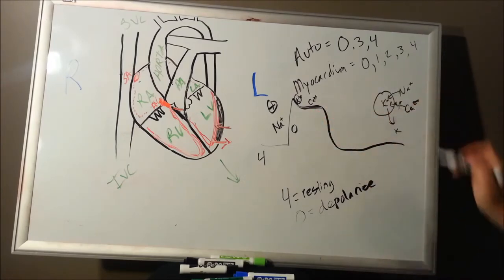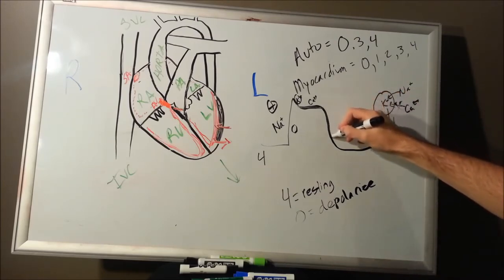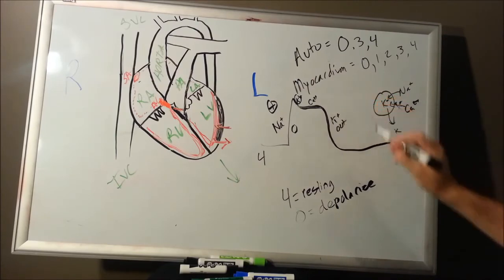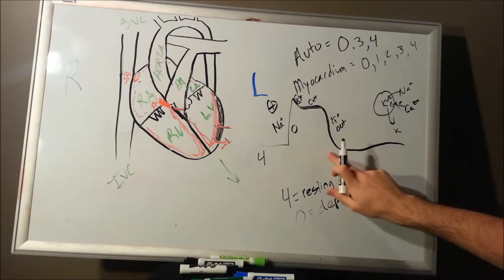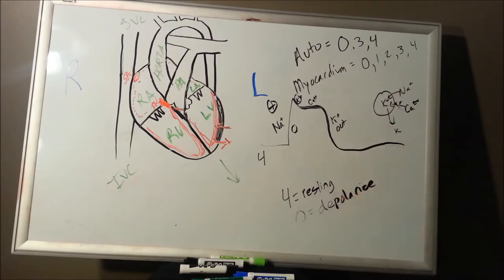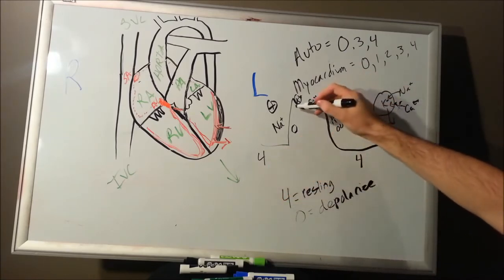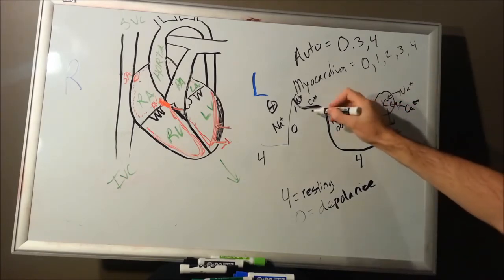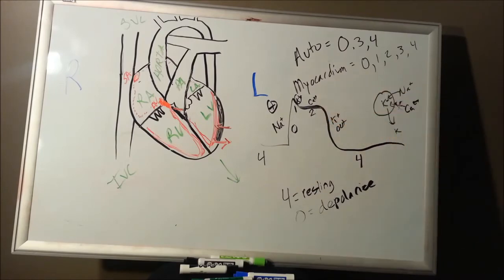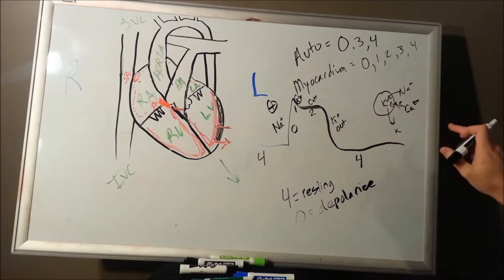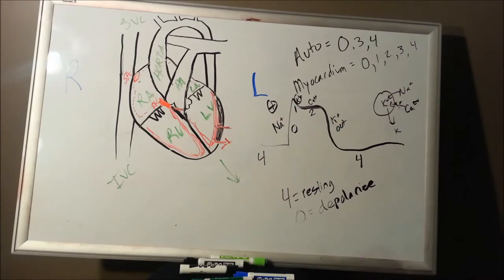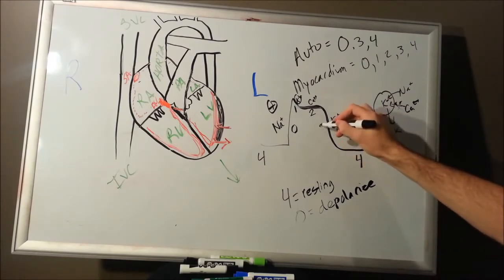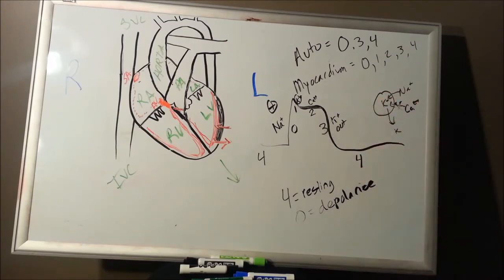It should be a straight-line plateau — calcium is coming in, potassium is leaving, charges stay about the same inside the cell. Then the calcium channel closes, so calcium is no longer coming in. With potassium still leaving, that brings the inside of the cell more negative, and it comes back down to resting membrane potential — phase four again.